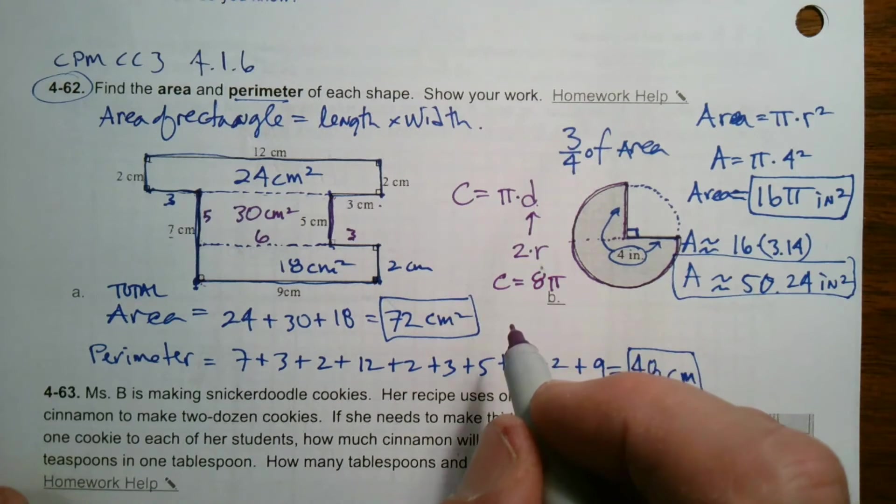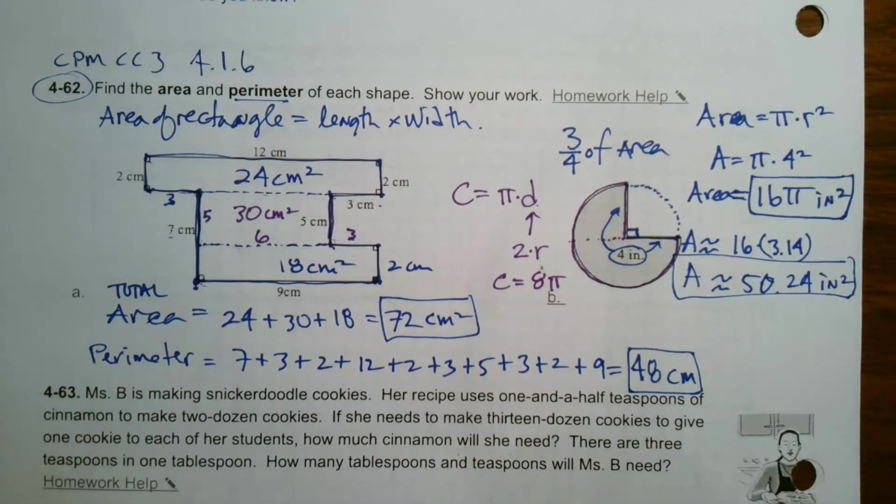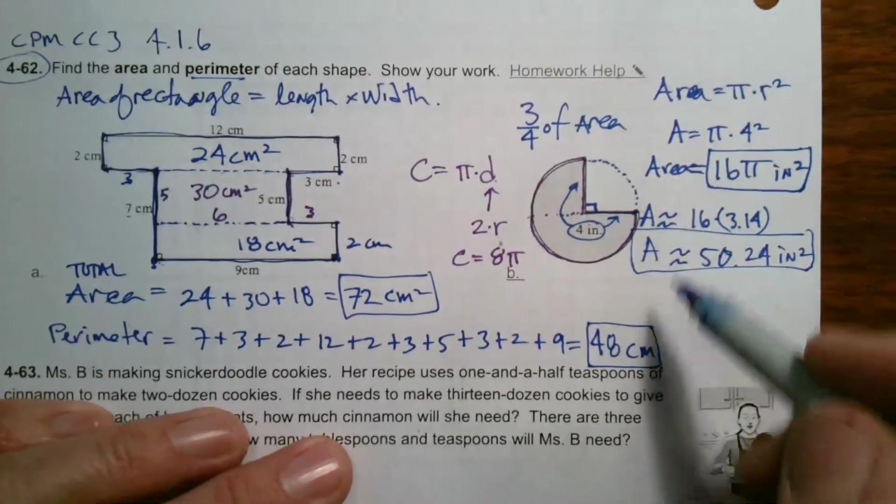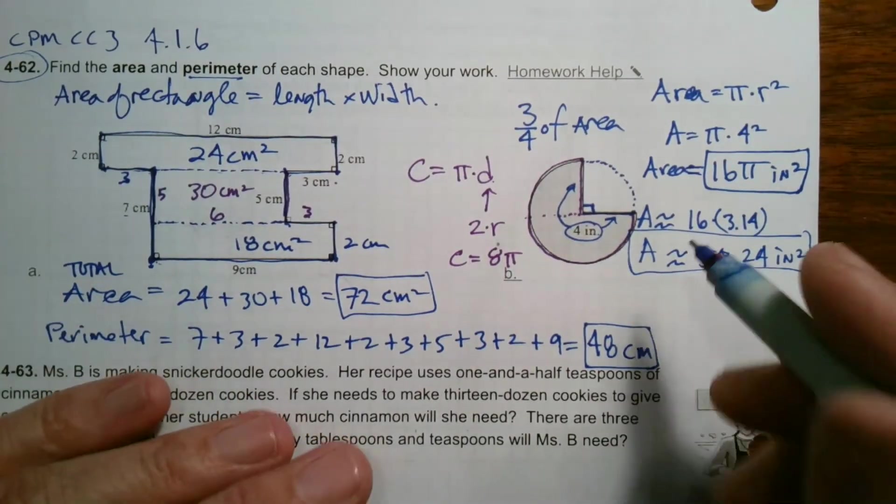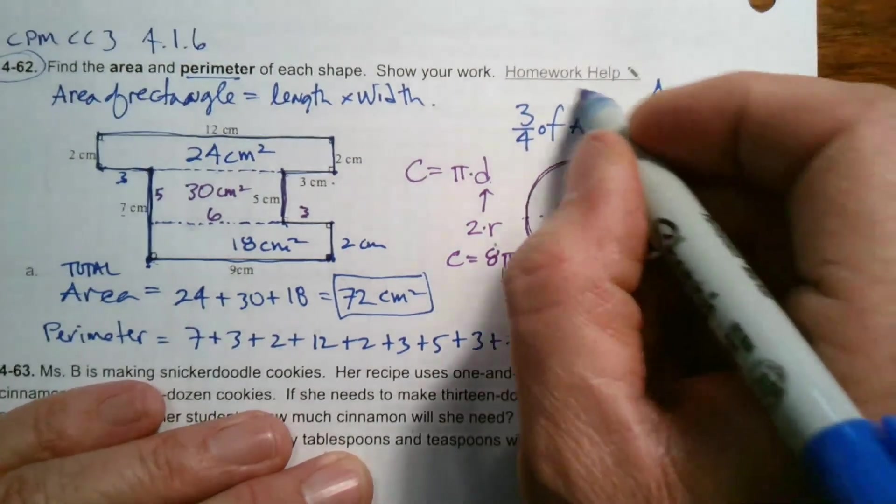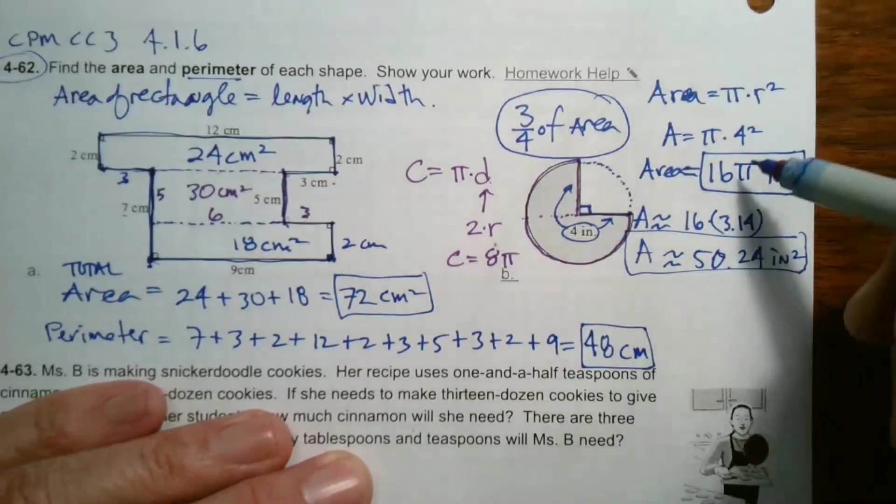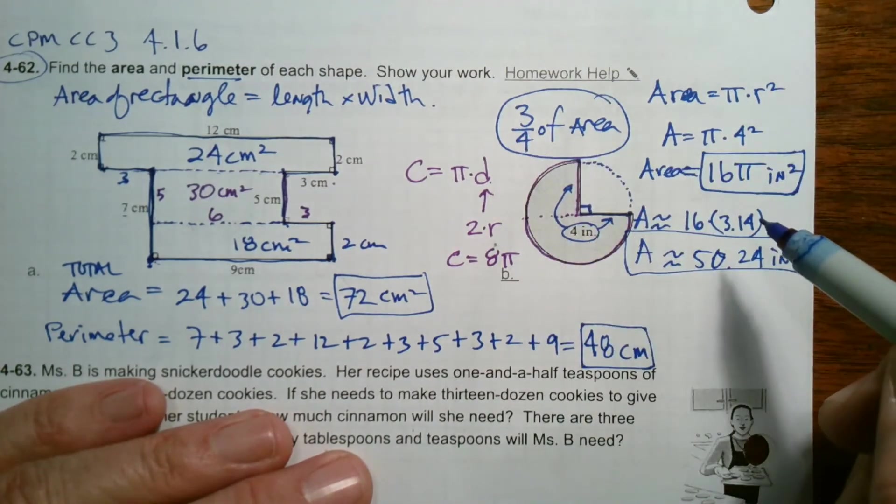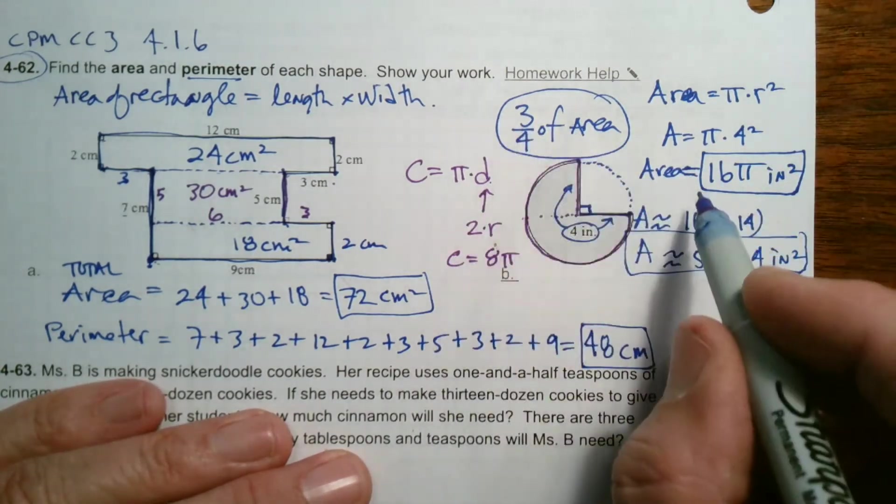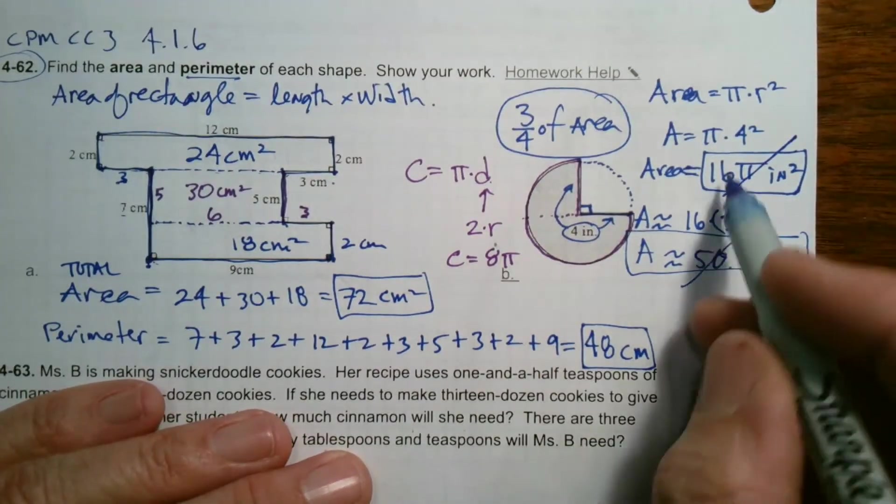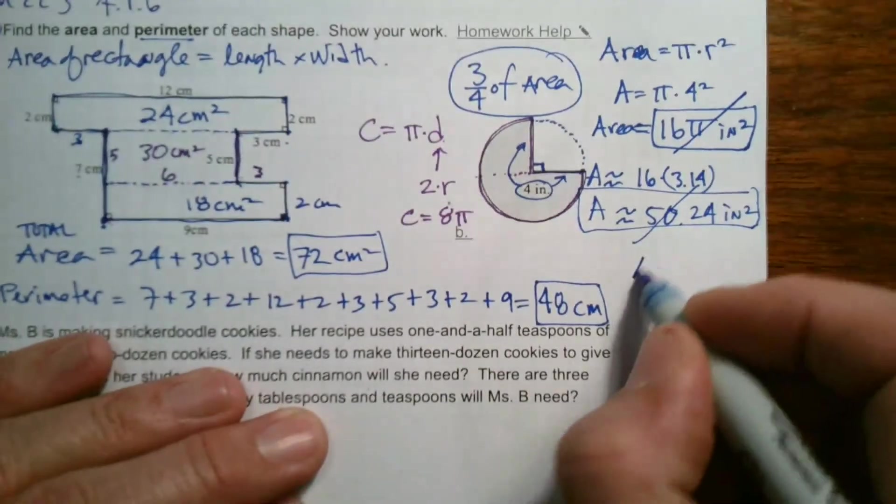But goodness, I made a mistake, didn't I? I got to back up. You might've caught it and been like, whoa, whoa, stop Mr. Dell. These are wrong answers, aren't they? Because I forgot this part. I gave you the area of the entire circle, not three fourths of it. So that's my bad. So I need to back up a little bit. I need to say that's not completely right yet. So let me go down here.